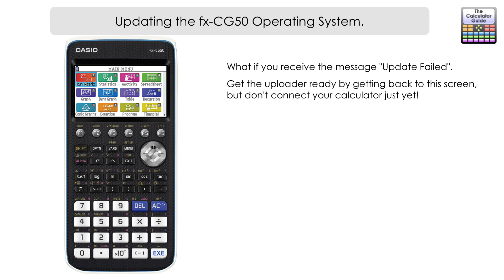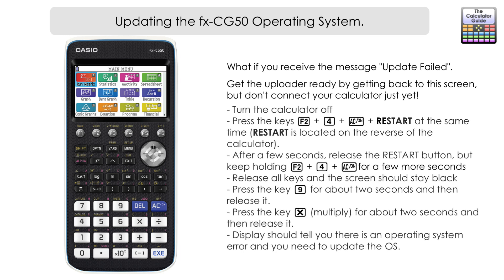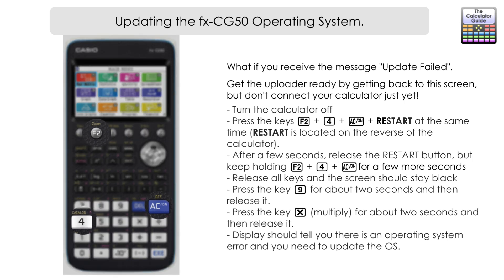Now we need to prepare the calculator using an unusual key combination: you need to press F2 and AC at the same time. On the reverse of the calculator there is a restart button in a small indent — you'll need a pen or pencil to press it. It's very difficult to do on your own, so if someone is with you, get them to help. If alone, press F2 and AC on one side, then use a pencil in your mouth to poke the restart button.